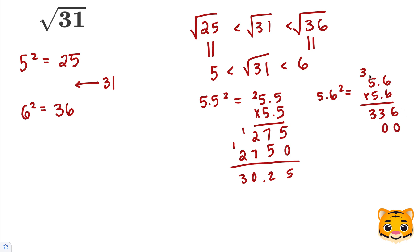5 times 6 is 30, carry the 3. And then 5 times 5 is 25, plus 3 is 28. Now when we add these together, we end up getting 31.36.